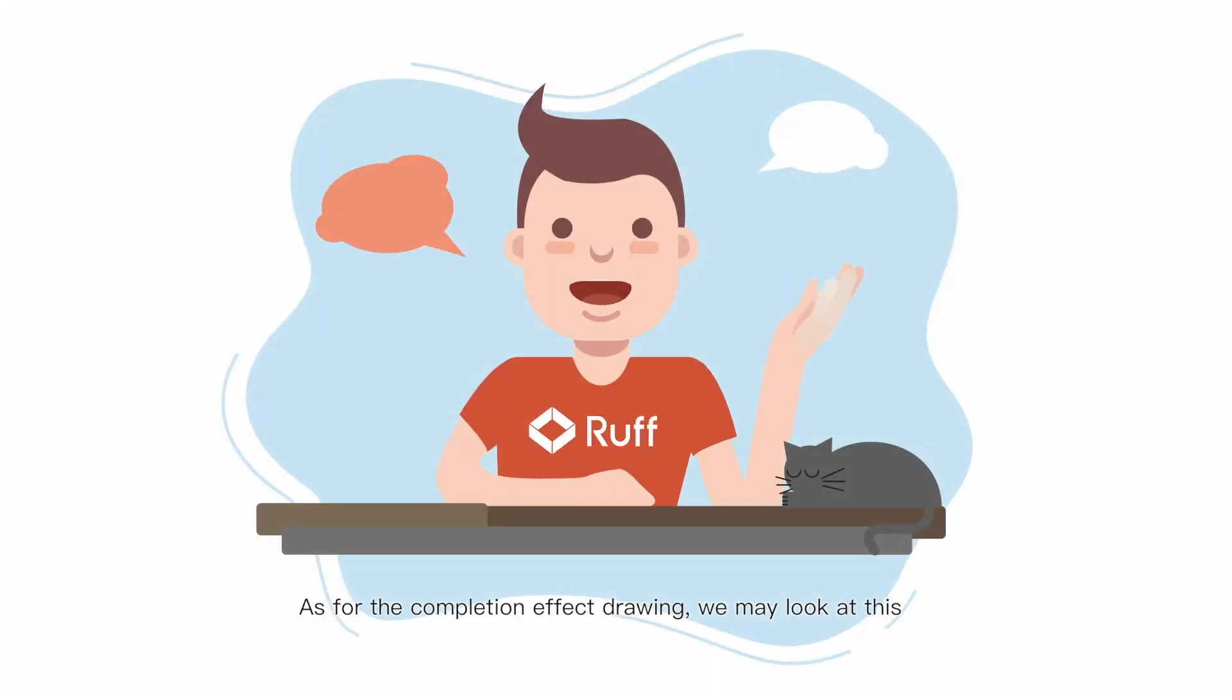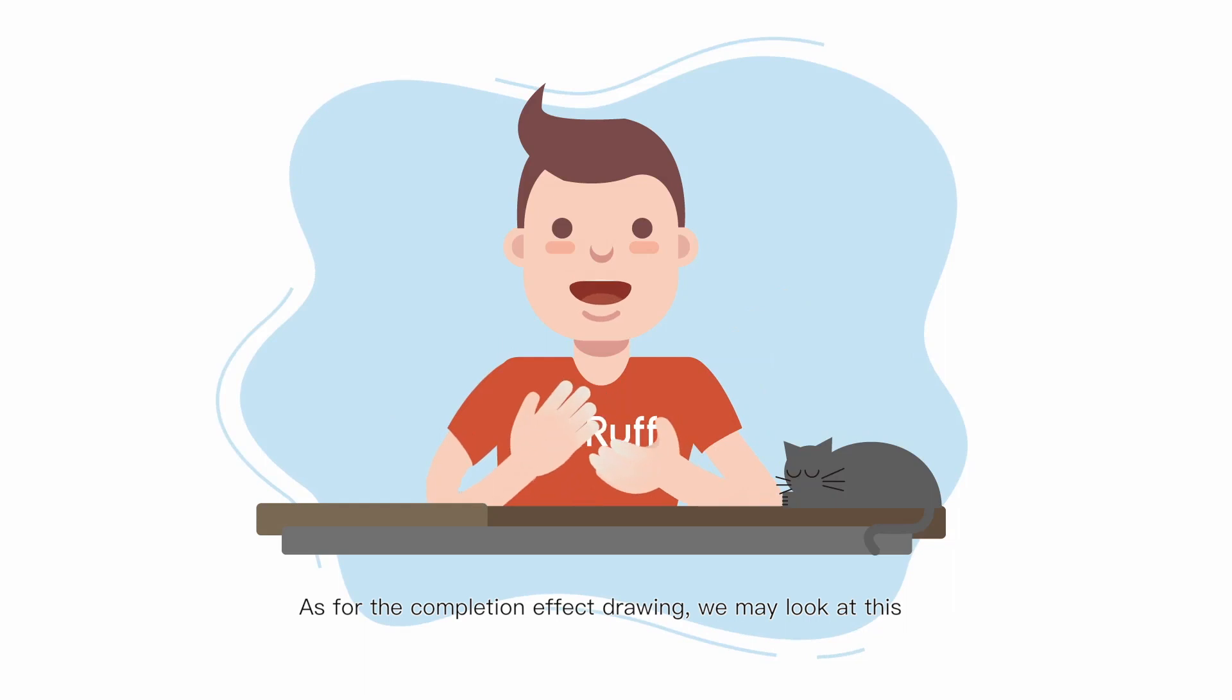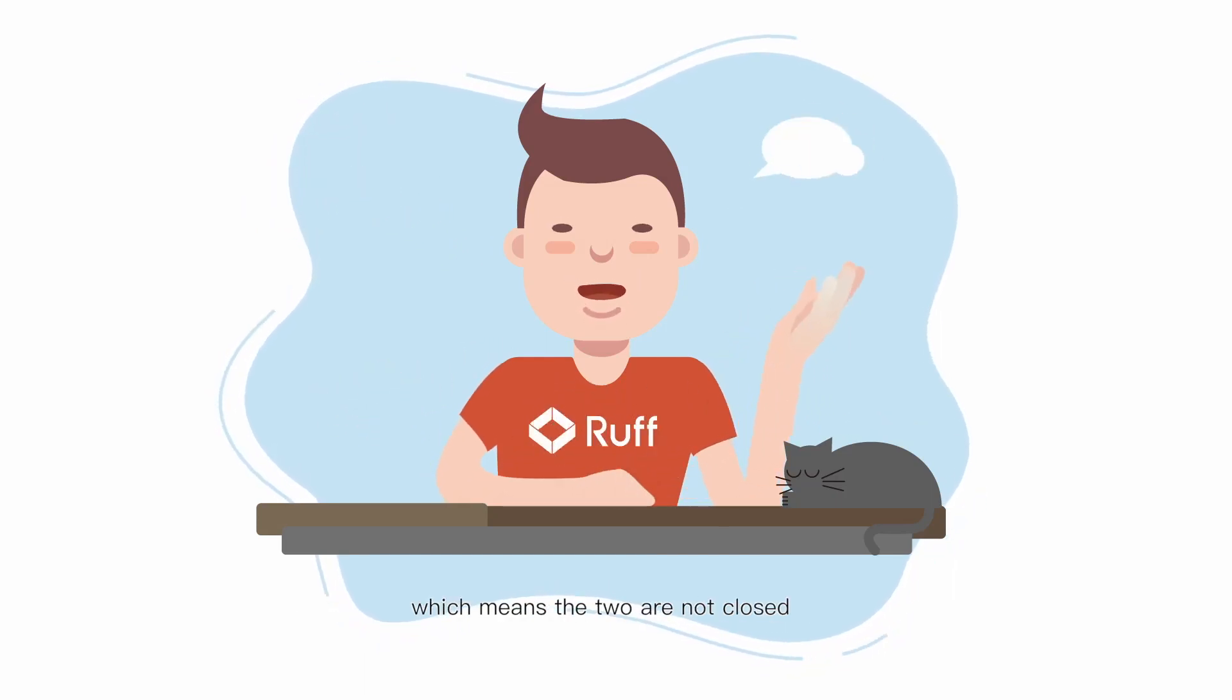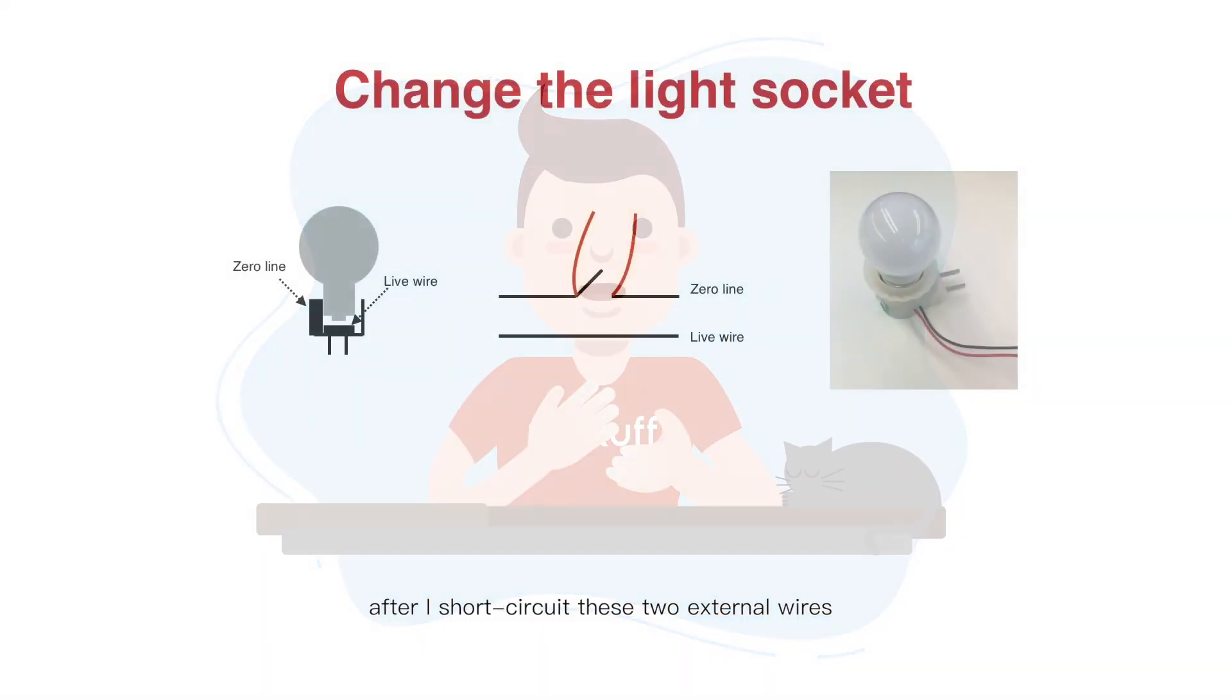As for the completion effect drawing, we may look at this. To test the capacity is, if this switch is in open status, which means the two are not closed, after I short-circuit these two external wires, the switch can also be in an on status.